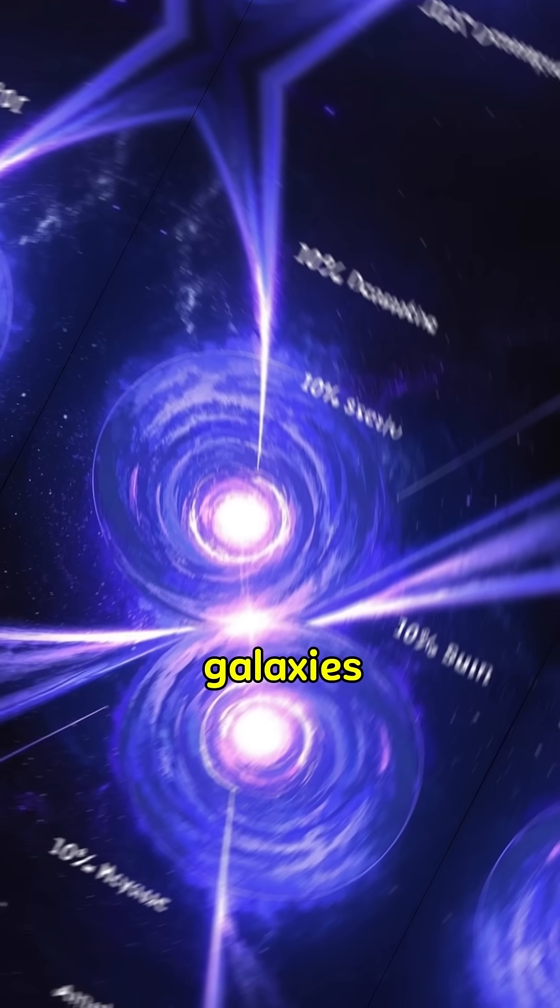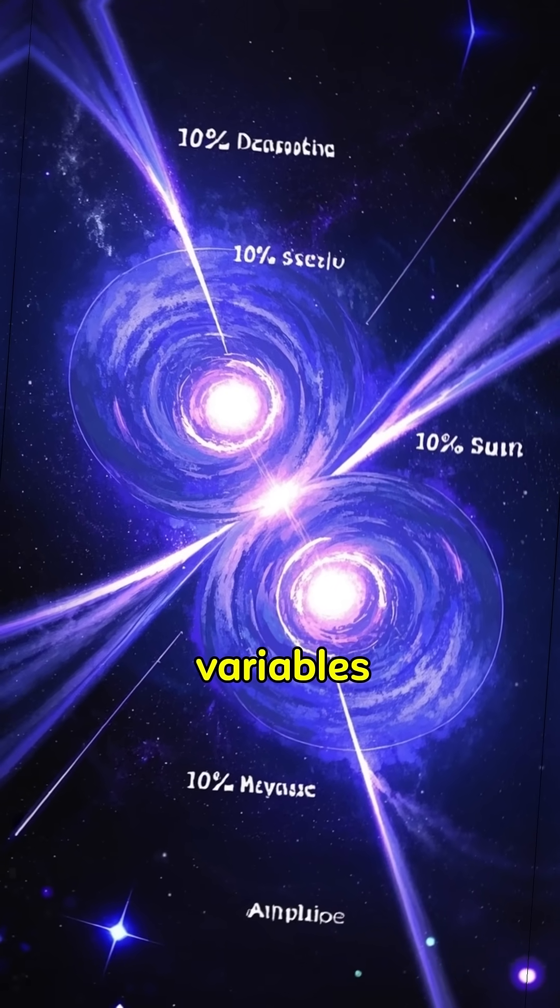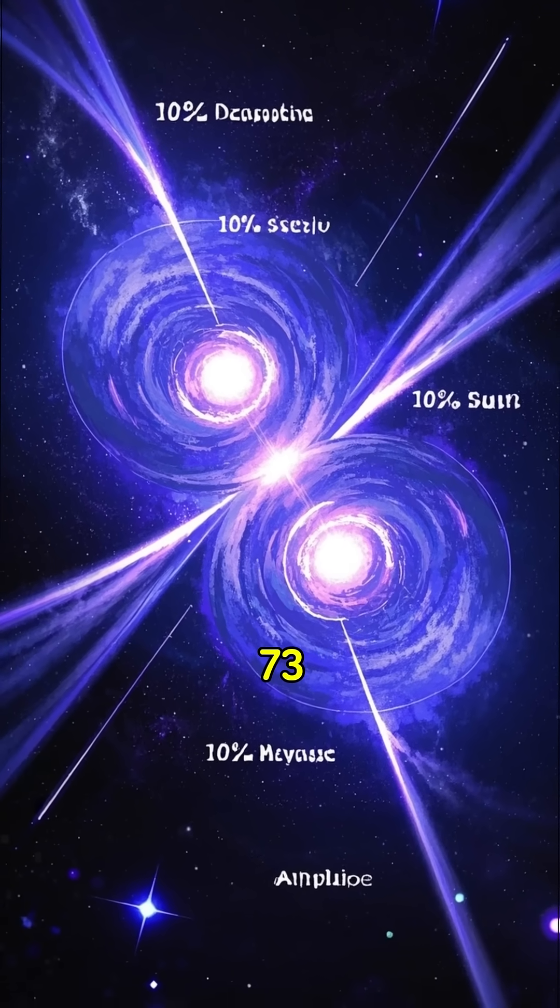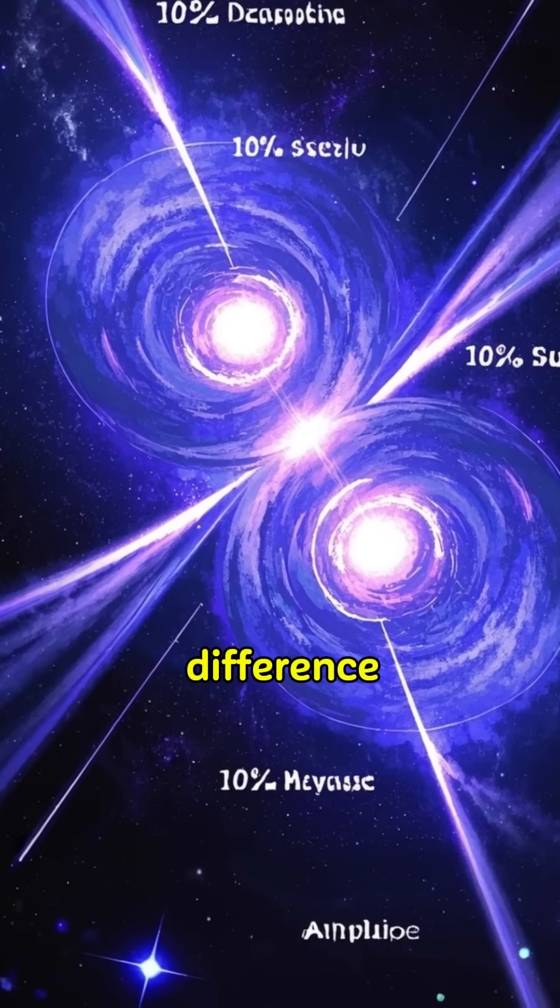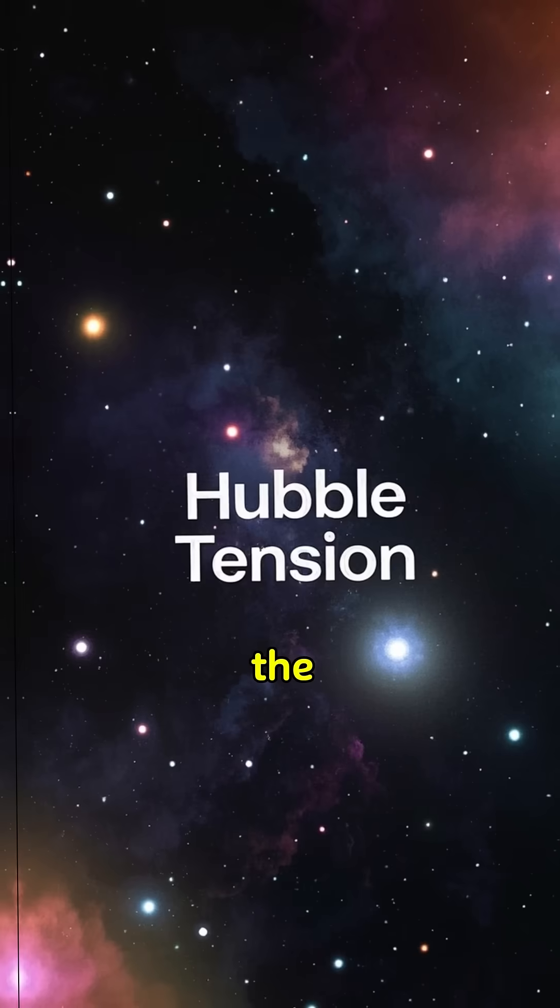But measurements of nearby galaxies from supernovae and cepheid variables suggest a rate of about 73 kilometers per second per megaparsec. That's a difference of 10%. It's called the Hubble tension.